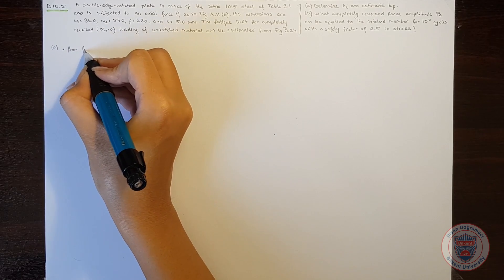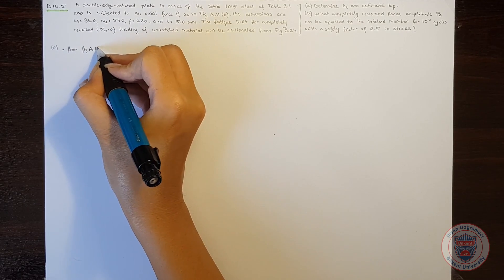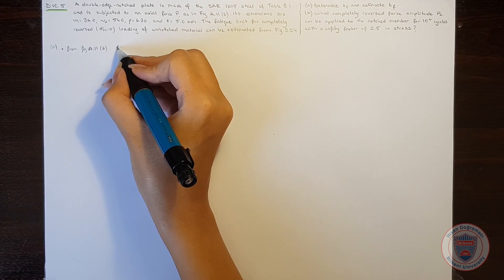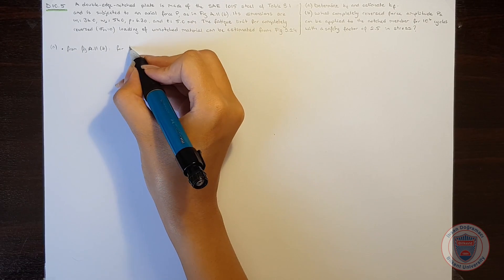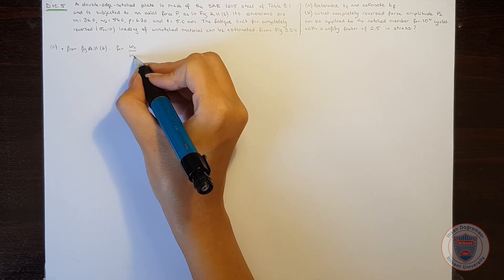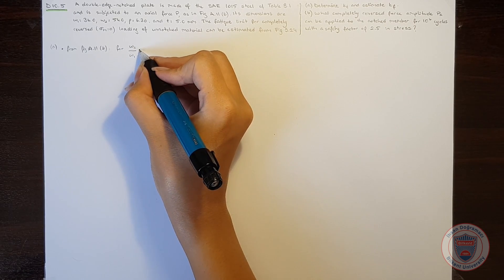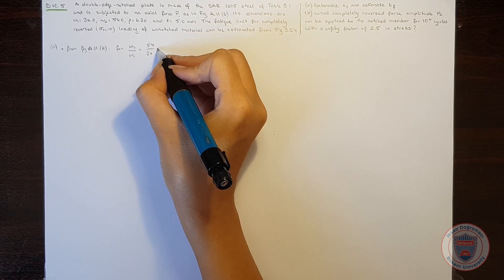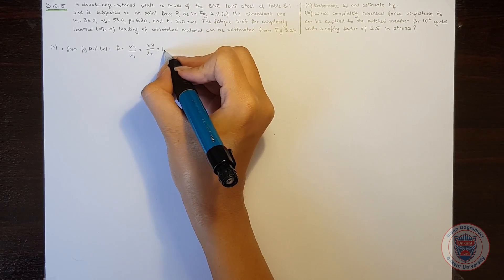From figure A.11 part B, for W2 over W1, which is 54 over 63 in our case, and it is equal to 1.5,